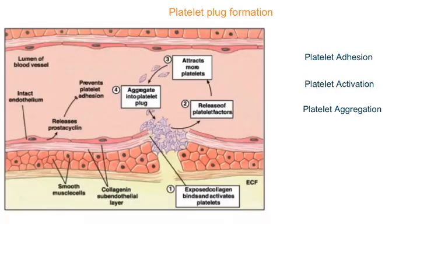First we need to understand the physiology of a blood vessel. This is the lumen of the blood vessel, and these are endothelial cells. Underneath, you have the sub-endothelial layer which contains collagen, and this part is smooth muscle cells. When there is intact endothelium — without any injury — endothelial cells will be releasing prostacycline, which prevents platelet adhesion.